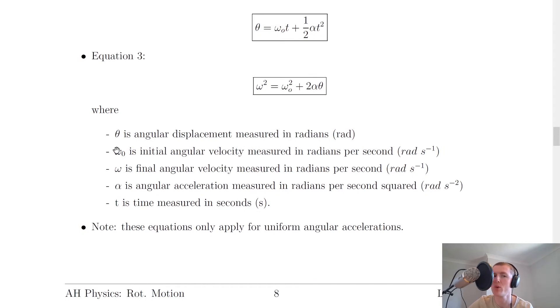So just like SUVAT for linear motion, we've got these terms here for angular motion. We've got theta as angular displacement measured in radians, or rad for short. Omega 0 is initial angular velocity measured in radians per second. Omega is final angular velocity measured in radians per second. Alpha is angular acceleration measured in radians per second squared.